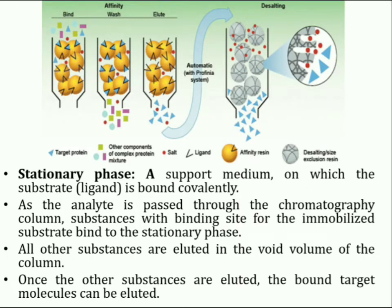In affinity chromatography, the stationary phase consists of a support medium on which the substrate is bonded covalently. Substrate is the ligand. They are usually bonded in such a way that the reactive groups responsible for binding of the target molecule remain exposed.